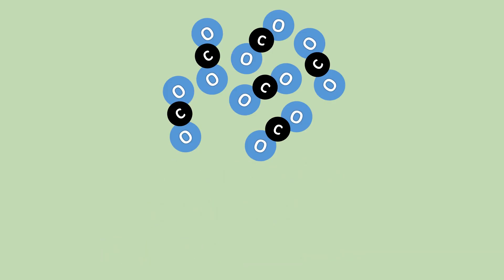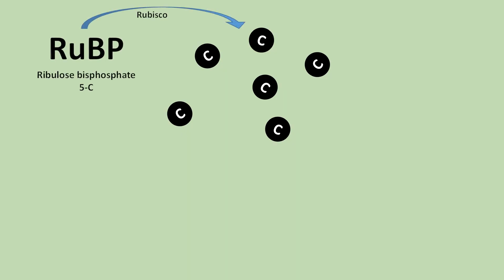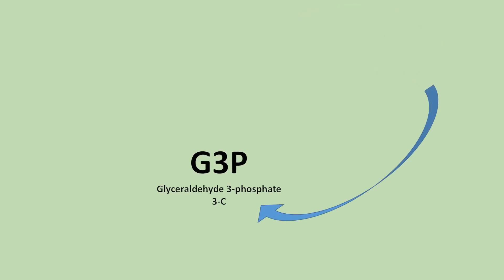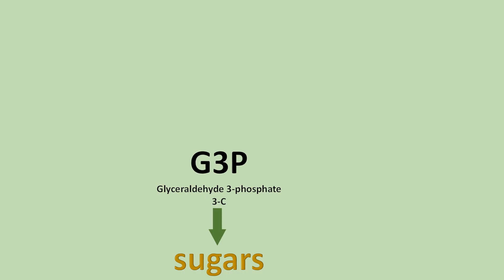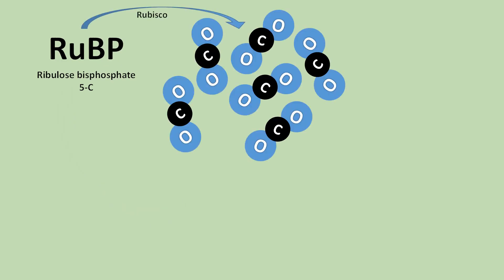The carbon fixation stage begins with six molecules of carbon dioxide joining with six molecules of a five-carbon molecule, RUBP. The oxygen atoms have been removed to simplify this diagram. In the presence of the enzyme RUBISCO, twelve three-carbon molecules of PGA are formed. Through a series of steps, these twelve three-carbon molecules are converted into twelve three-carbon molecules of G3P. Two of the G3P molecules are then converted into glucose and other sugars. The remaining ten molecules of G3P are then recycled back into six molecules of the five-carbon molecule RUBP, to start the cycle all over again.